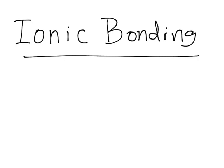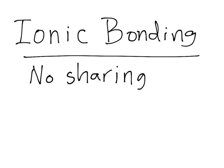Ionic bonds, unlike covalent bonds, do not occur because of sharing — there is no sharing. These bonds exist because there is attraction between the opposite charges of each atom, so there is going to be an anion and a cation. A cation is positive — a good way to remember it: cats have paws, so cation is positive. And the anion is negative, but if you remember one, you can figure out the other.